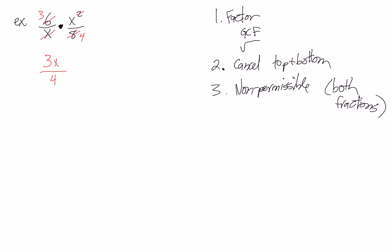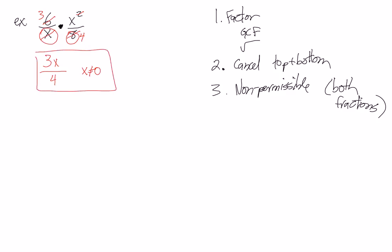Cancel whatever you can top and bottom, then do your non-permissibles. Remember your non-permissibles always go back to the original. In the original we have an X on the bottom, so X can't equal 0. And then we have an 8 on the bottom, which has no non-permissibles.